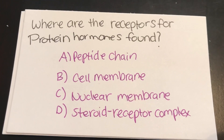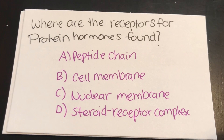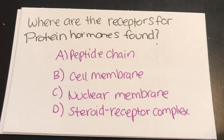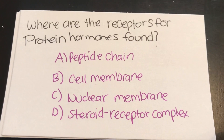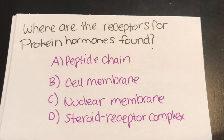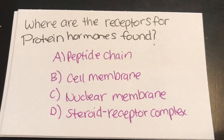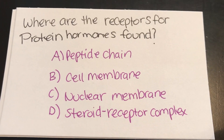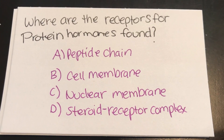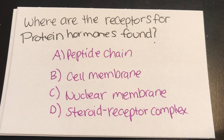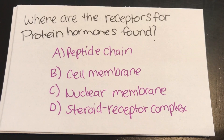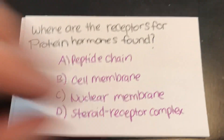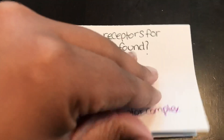Where are the receptors for protein hormones found? A, peptide chain. B, cell membrane. C, nuclear membrane. Or D, steroid receptor complex. Answer: B, cell membrane.